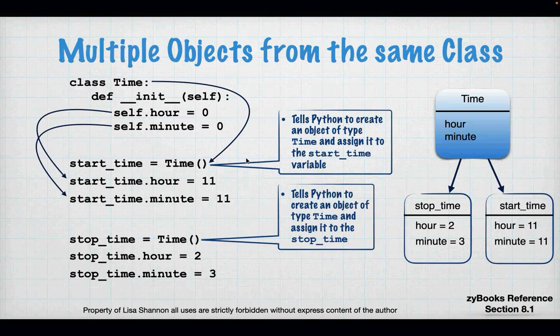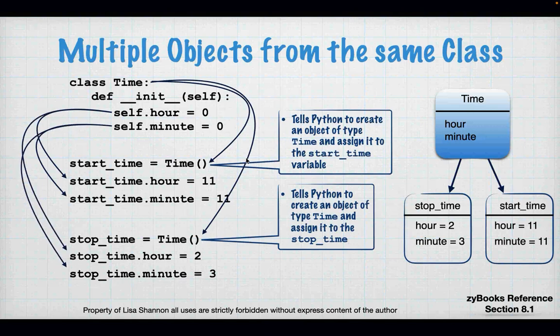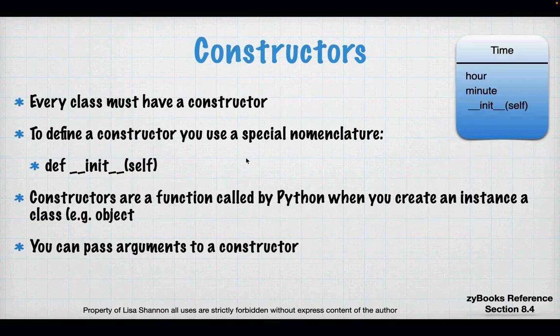I could compare start_time and stop_time to get the total time of the race — maybe keep start and stop times for a bunch of racers and compare who did well. Every class has a constructor — you can't get rid of it. A constructor is defined with def __init__(self). That's how you do it — it's a function Python automatically calls.